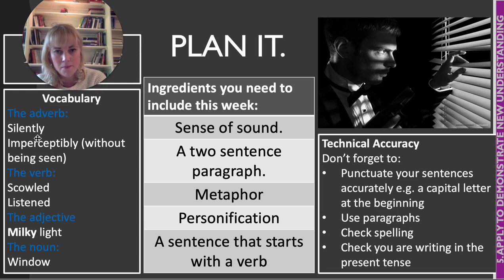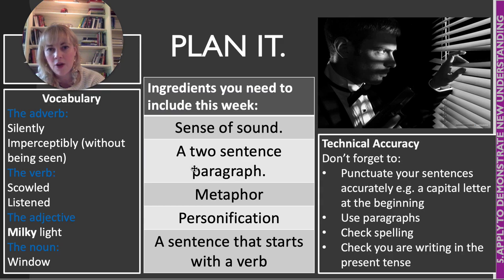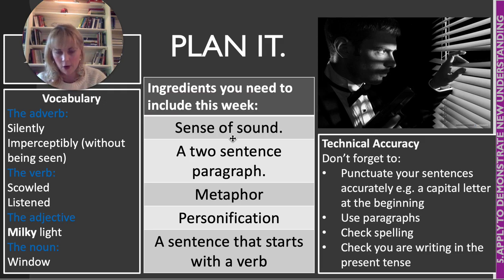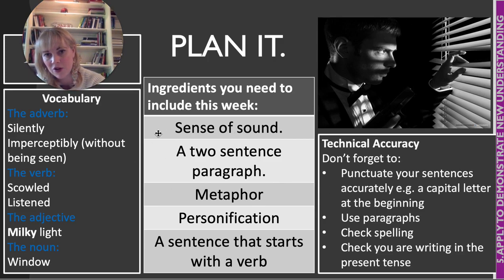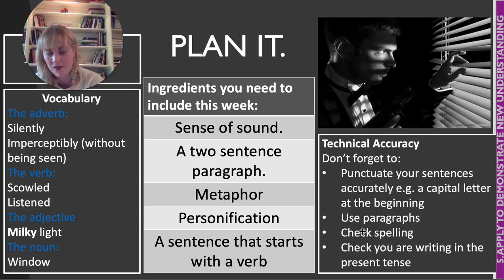The middle column contains the ingredients I want you to try and include in your creative writing: create a sentence developing the sense of sound; a two-sentence paragraph to build tension or suspense; metaphor; personification; and a sentence that starts with a verb. The reason I've set these is to ensure you demonstrate a real breadth of methods and skills. The more you can embed, the better — but it's not an exhaustive list, so if you wish to use your own already-planned imagery, that's absolutely fine. You also need to make sure you're thinking about sentence structures, not just imagery. For technical accuracy, check everything you write — if you're not sure of a spelling, look it up.